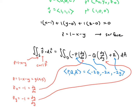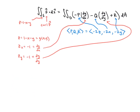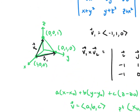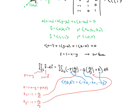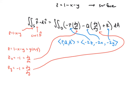The last thing we need is region D. D is the shadow of the surface on the xy-plane — a triangular region going from (0,0) to (1,0) to (0,1). So in our integral, x goes from 0 to 1, and y goes from 0 to this line, which is y = 1 - x.